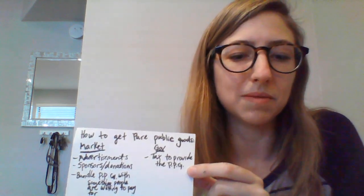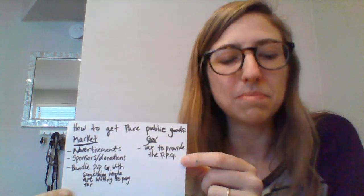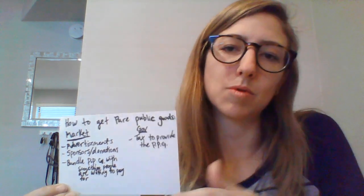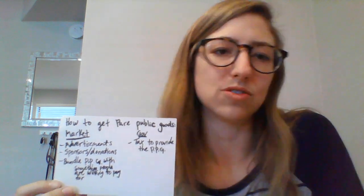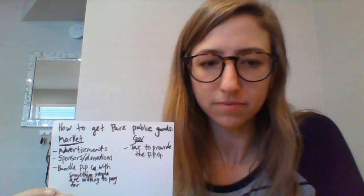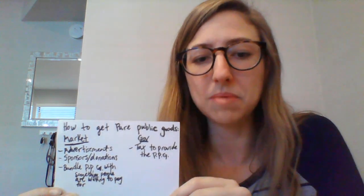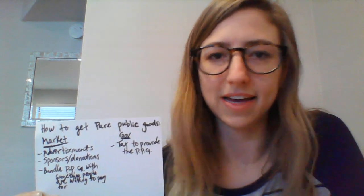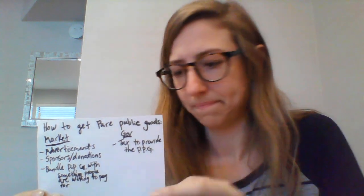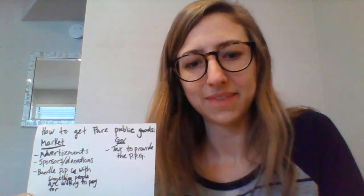The government solution is pretty simple — you just tax people and use that money to provide the pure public good. That's how we provide national defense; the government taxes people and then hires the military, the CIA, and so on. All right, thanks guys.